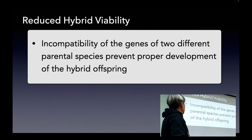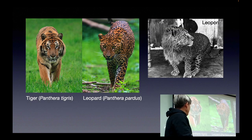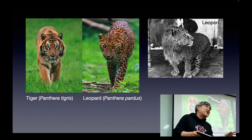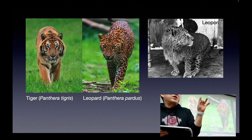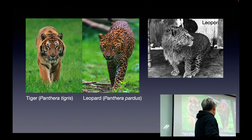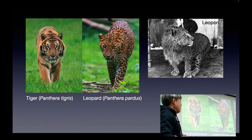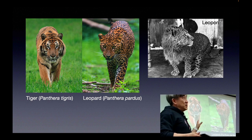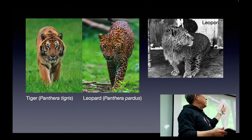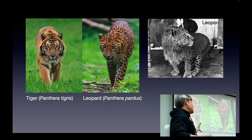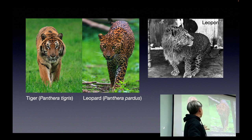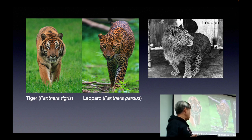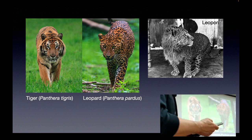Even in captivity, we can have some very rare hybrids — for example, a tiger and leopard hybrid, called a leopard. In this case, they don't seem to have any obvious viability problem, and the fertility problem is a mixed bag. But in nature, they don't really occur — for many reasons, maybe some fertility problems, or in the first place, they have some kind of behavioral problem: why would a leopard dare to mate with a tiger, or vice versa?